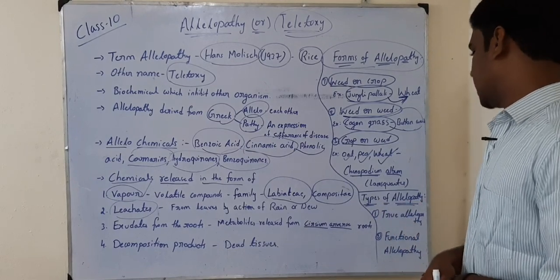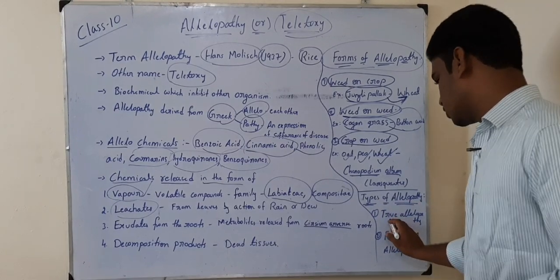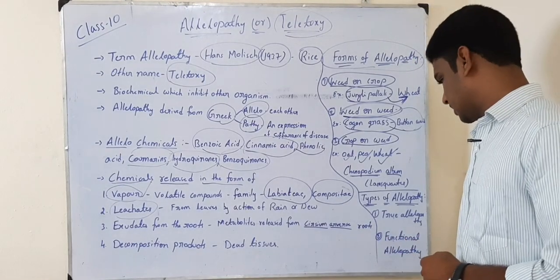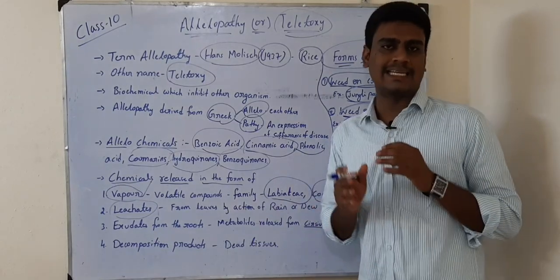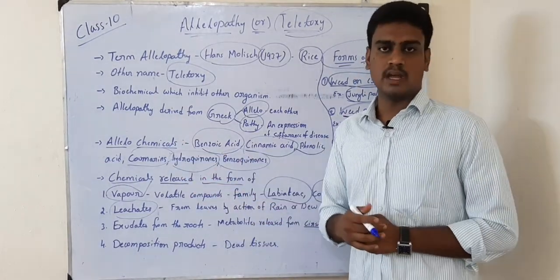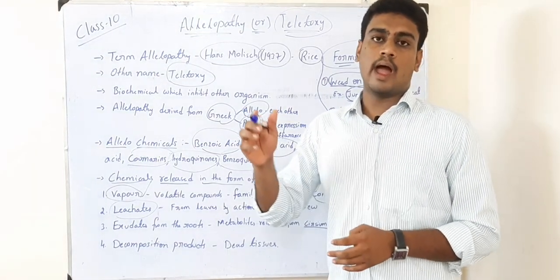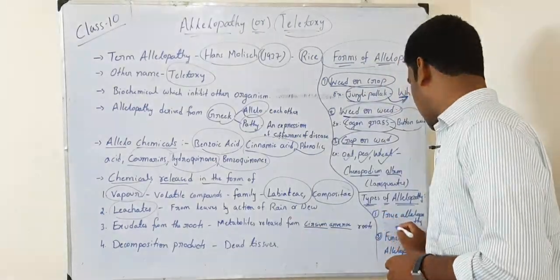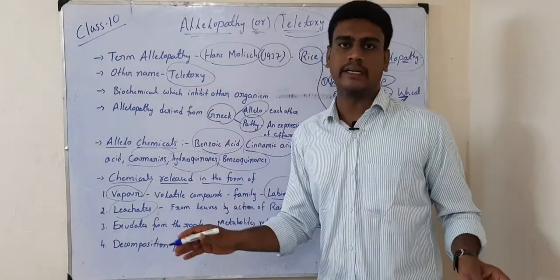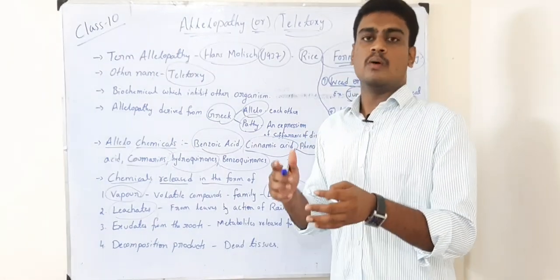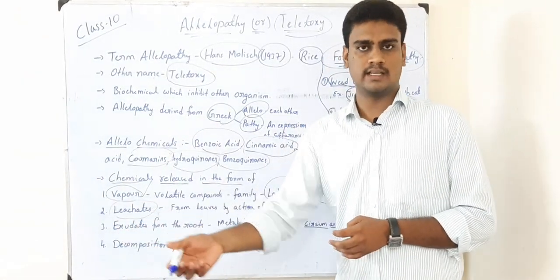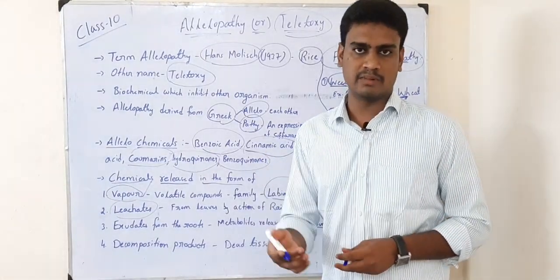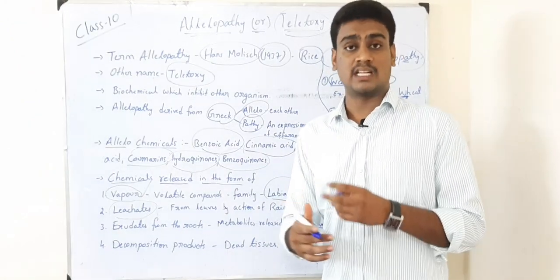Now let us look at the types of allelopathy. There are two types: true allelopathy and functional allelopathy. In true allelopathy, when a plant releases allelochemicals, those chemicals are ready-made to suppress or kill another plant directly — there is no intermediate intervention. The chemical released by one plant can directly affect the other plant.